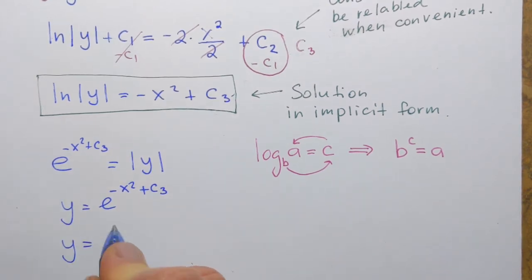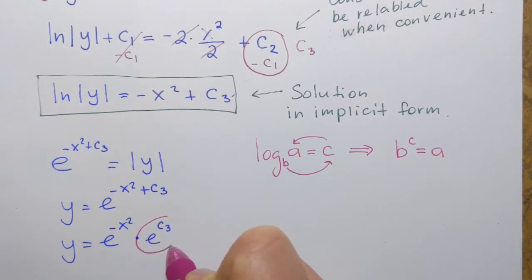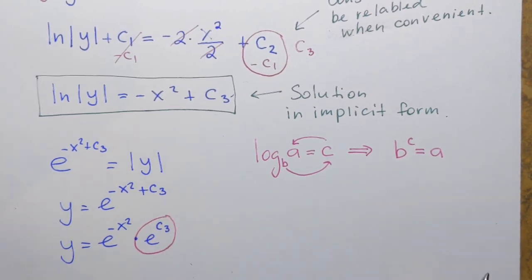So, what I mean is that this expression on the right hand side can be rewritten as e to the negative x squared times e to the c3. c3 is a constant, right? e is the constant. Constant raised to power, that is constant, gives me another constant.